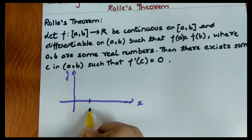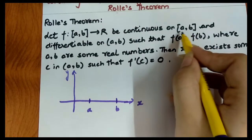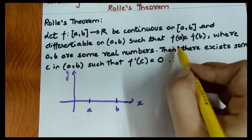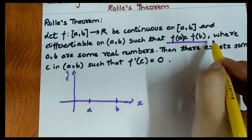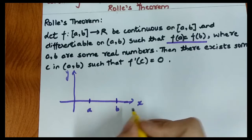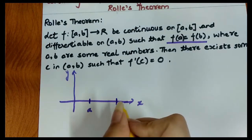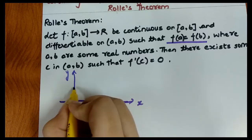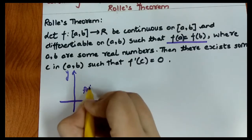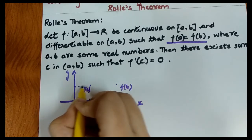We have given a differentiable function on (a, b). The next point is that f(a) equals f(b), meaning if two points a and b are given, the y-values at those points will be the same. So if this is f(a), then f(b) will be equal to it.